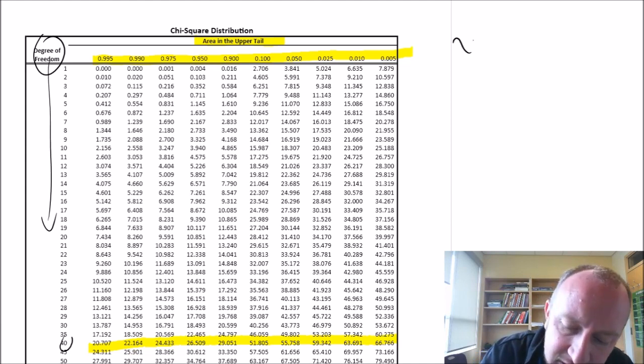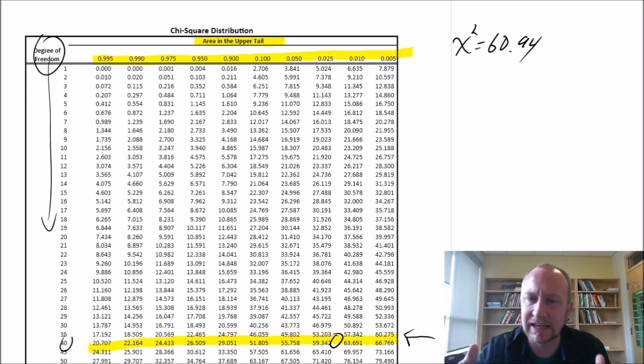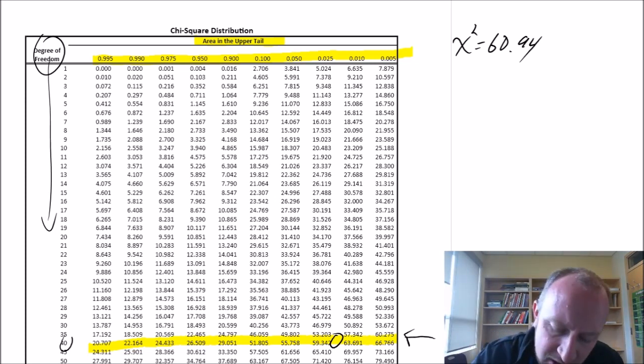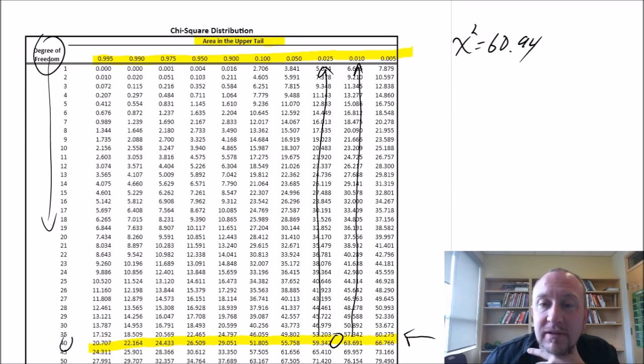So our test statistic just to remind us was 60.94. So we're looking in that row of critical values. Where's 60.94? Somewhere in between these two values. Just like the t-tables we're getting approximate p-values here, right? So the relevant probability is going to be between these two probabilities, 0.01 and 0.025.